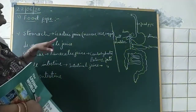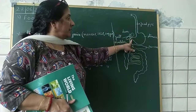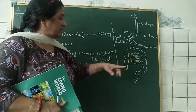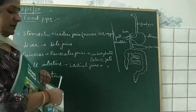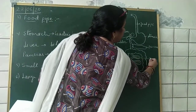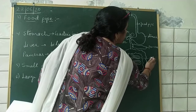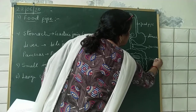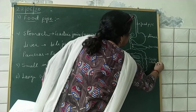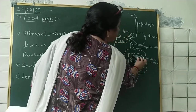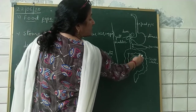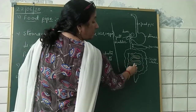After the stomach, the food enters into the small intestine. It is called small intestine because its thickness is less, but it is 6 to 7 meters long.